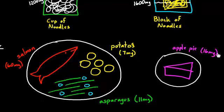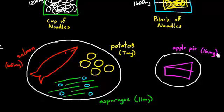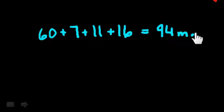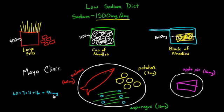So if I'm totaling all of this up, I'll do it in the corner here. I've got, let's say, 60 plus 7 plus 11 plus 16. And that total comes to, let's see, 71, 78, 88, 94 milligrams of sodium. And so 94 milligrams of sodium is well within my limit of 1,500 milligrams of sodium per day.